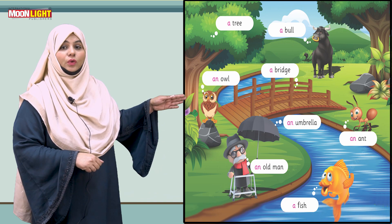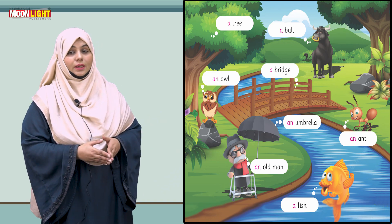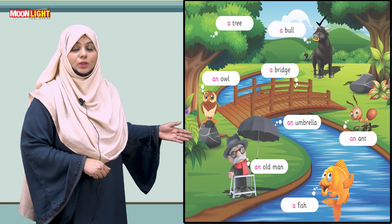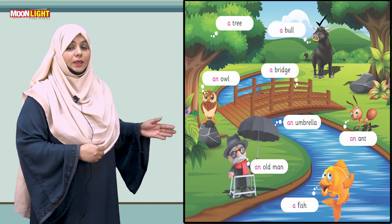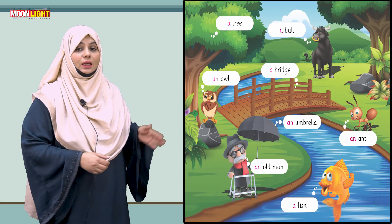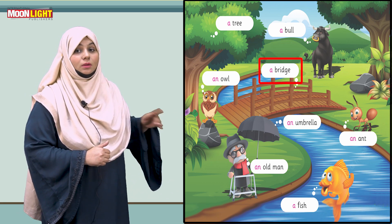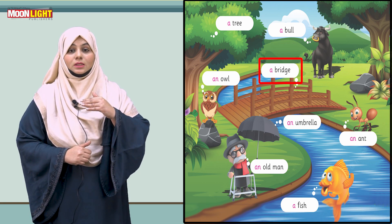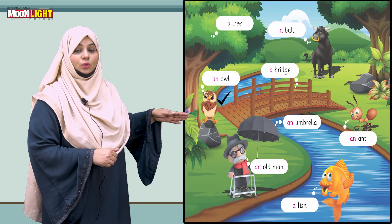Now read the page with me. Here you can see a picture of a tree — the first sound is 't', and 't' is a consonant, so we write 'a tree'. Here you can see a picture of a bull — 'b' is a consonant sound, so we write 'a bull'. Here you can see a bridge — 'b' is a consonant sound, so we write 'a bridge'.